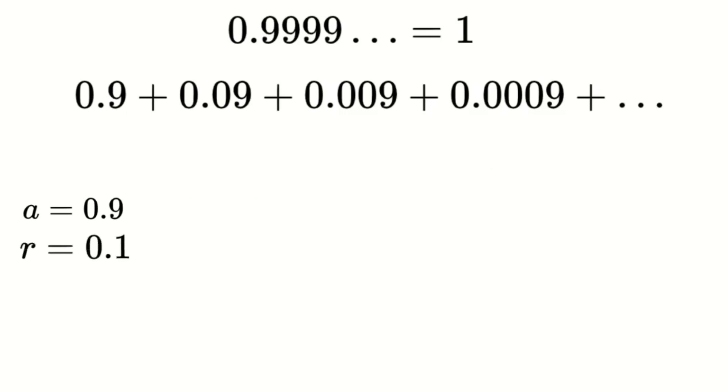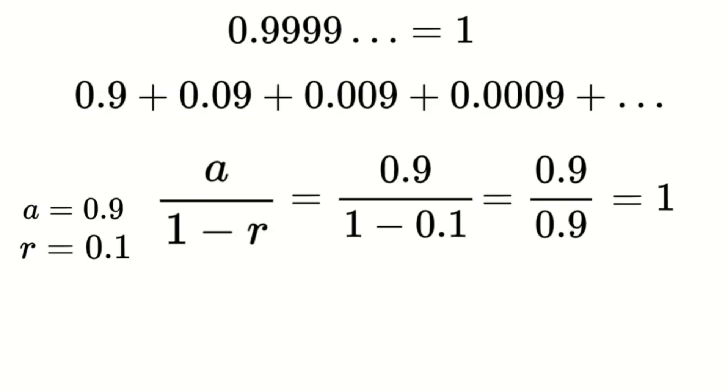Using the formula for the sum of an infinite geometric series, which is S equals A divided by 1 minus R. Substituting the values, we get S equals 0.9 divided by 1 minus 0.1, which simplifies to 0.9 divided by 0.9, and that equals 1. Thus, this method concludes that 0.99 dot dot up to infinity equals 1.